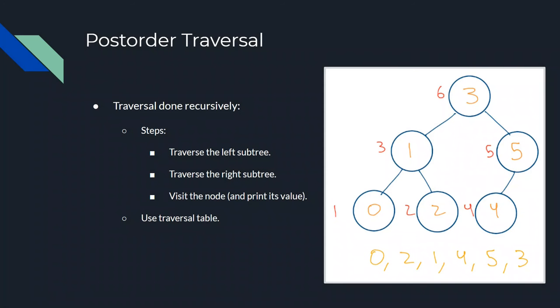Then you have the post-order traversal, which is another variation where instead of printing out the value and then traversing the left and right subtrees, you first traverse the left and right subtrees and then print out the value. We also use a traversal table for this.